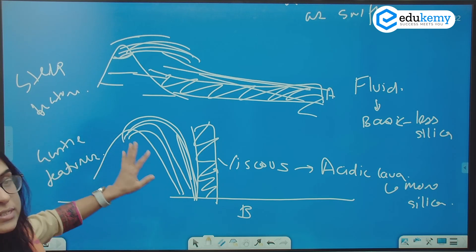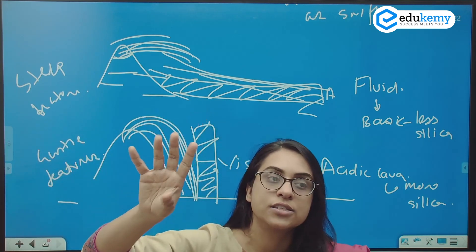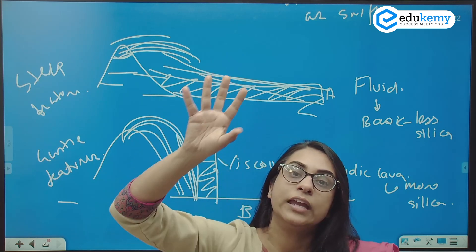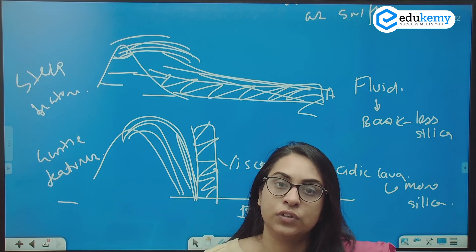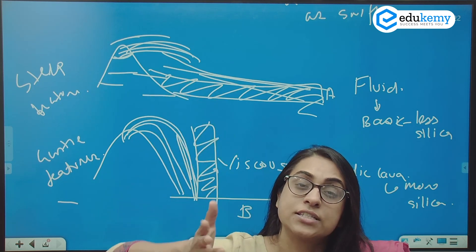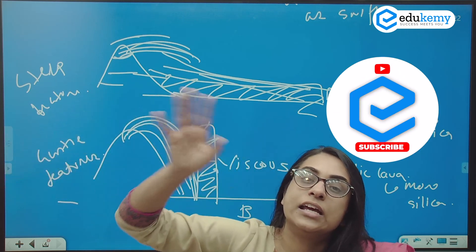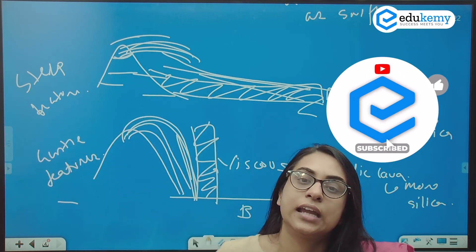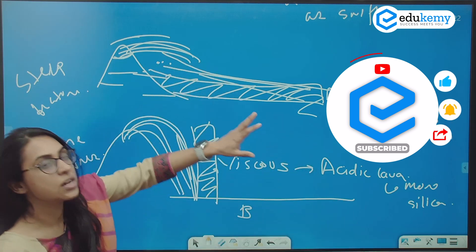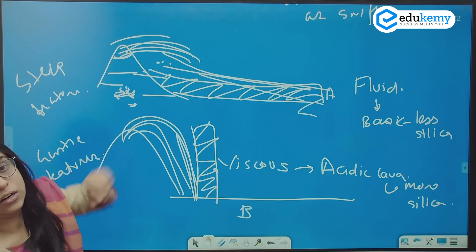This is what you have to understand in volcanism. Can volcanism serve as evidence of the earth's interior? Yes. On the basis of the composition of lava, we can tell about the minerals in the layers of the earth. If there is a steep feature, we can say it has got more silicate minerals, whereas if it is fluid, we can say it has got less silicate minerals. So the lava composition and the features can help us know about the minerals in the interior of the earth.